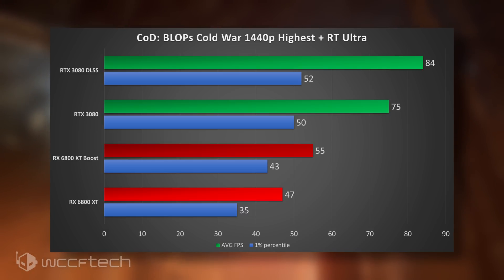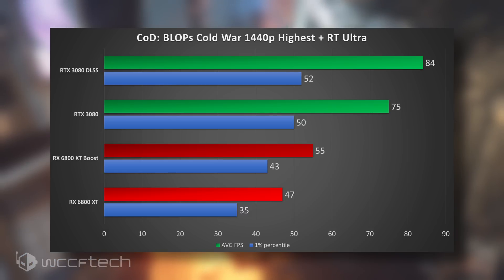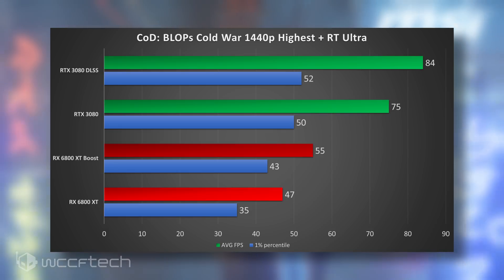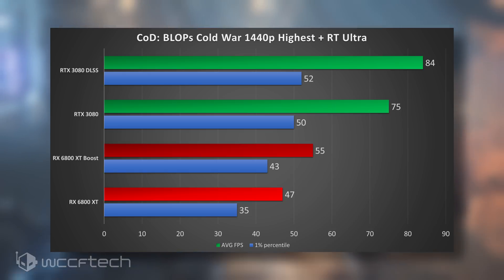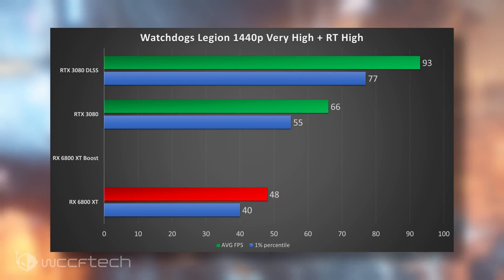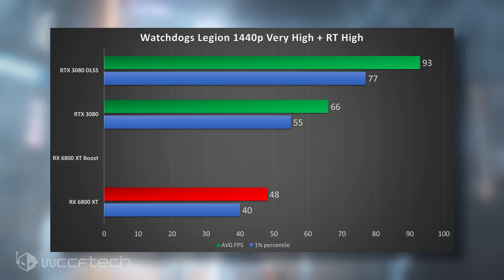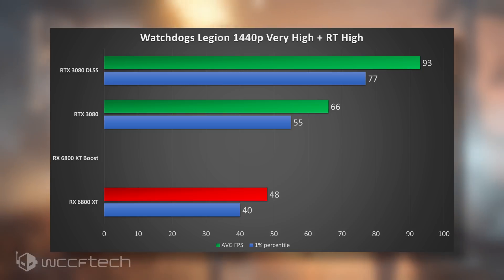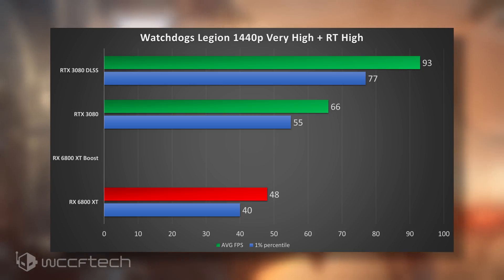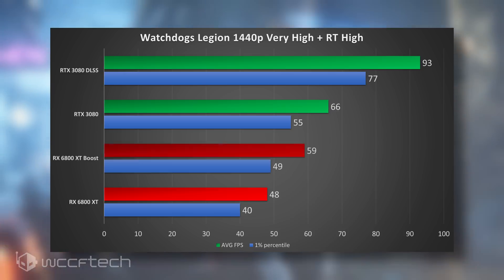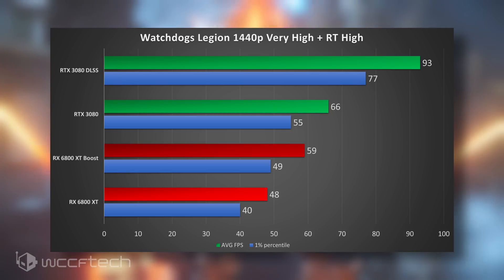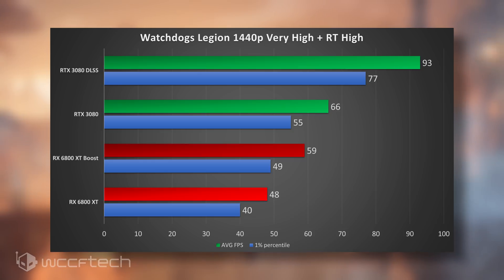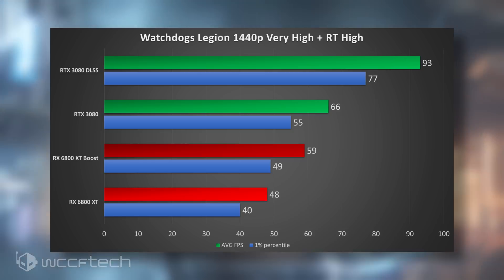That's not quite going to take you up to 3080 level performance, but if you drop the settings down to ray traced medium and turn off ambient occlusion, you'll get plenty of performance to stay over 60 FPS. In Watch Dogs Legion, we saw 48 FPS average on the 6800 XT, not quite as playable as the 66 FPS without DLSS on the 3080. Enable Trix Boost and you go up to 59 FPS — a 23% increase — and that 1% percentile is now at or above the average FPS of the 6800 XT at native.